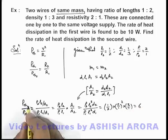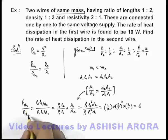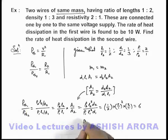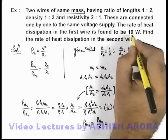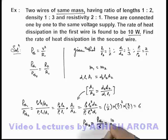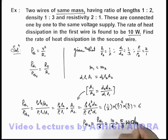So if P_thermal dissipation in 1 upon P_thermal dissipation in 2 is 6, then P_thermal dissipation in 2 we can write as P_thermal dissipation 1 by 6. It is given to be 10 watt, so this can be written as 10 by 6, which is 5 by 3 watt. That is the answer to this problem.